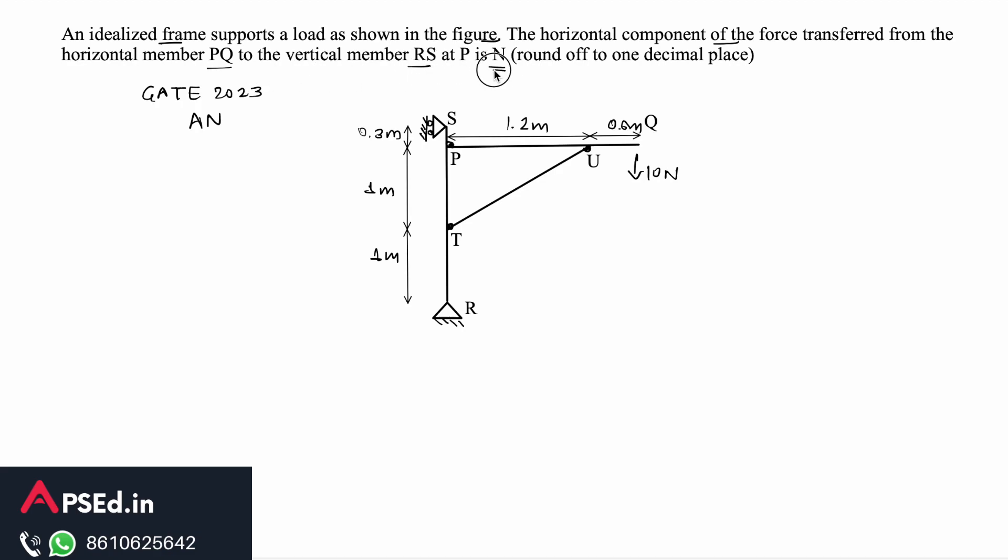So basically we have these two members PQ and RS. PQ is this horizontal member and RS is the vertical member. Here this load of 10 Newton is applied vertically at Q.